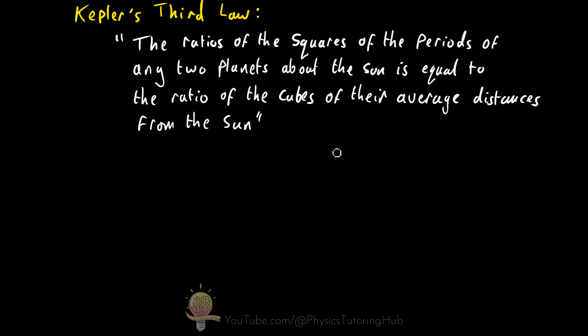So in equation form, we start off on the left hand side with a ratio. And we're looking at the ratio of the periods of any two planets. And the period is simply the time it takes the planet to complete one single orbit. So the period of the first planet represented by T here. The second planet.